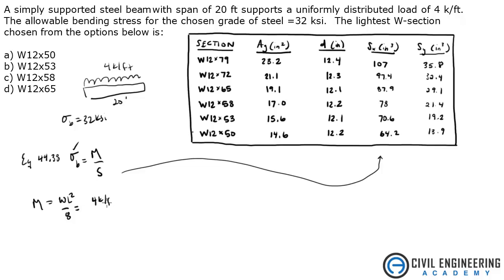W is 4 kips per foot times that by 20 squared, 20 feet squared divided by 8. That equals 200 foot kips.